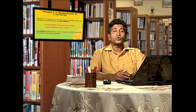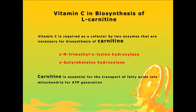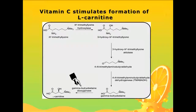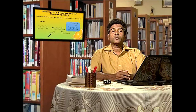Vitamin C or ascorbic acid is also important for the synthesis of carnitine. Two enzymes — epsilon-N-trimethyl-L-lysine hydroxylase and gamma-butyrobetaine hydroxylase — are important in the carnitine biosynthetic pathway. Carnitine is essential for transporting fatty acids into the mitochondria so that fatty acids can be catabolized and ATP is produced. In the biosynthetic pathway of carnitine, the very first and last steps require L-ascorbic acid as a cofactor.